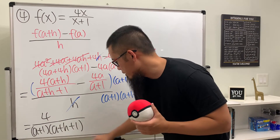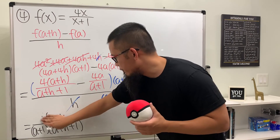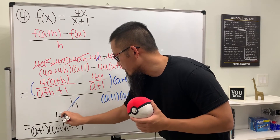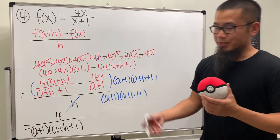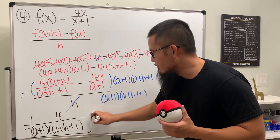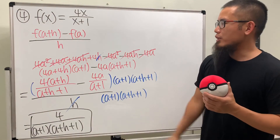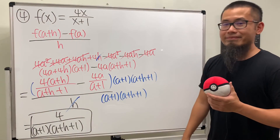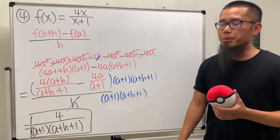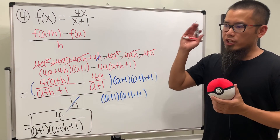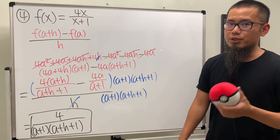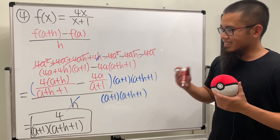The final answer is 4 over (a+1)(a+h+1). This is the difference quotient of the rational function. Hopefully this video helps — check out my other videos if you need more help, and subscribe for future videos. That's it!